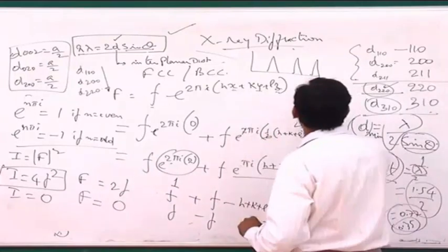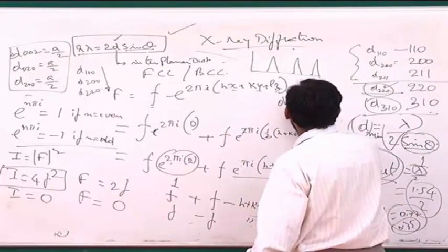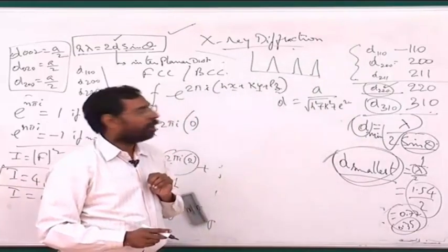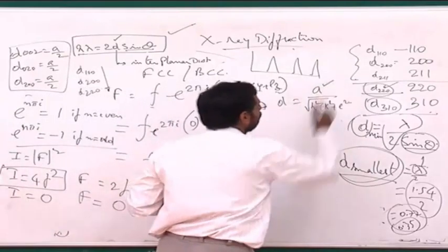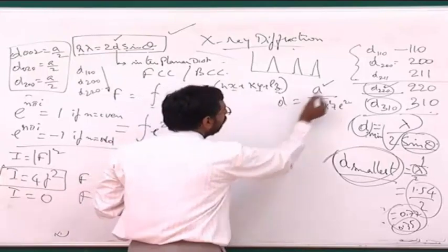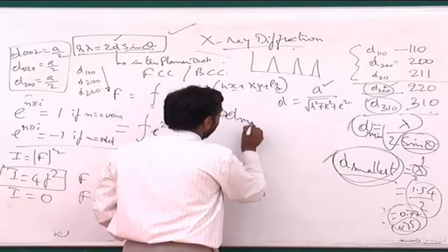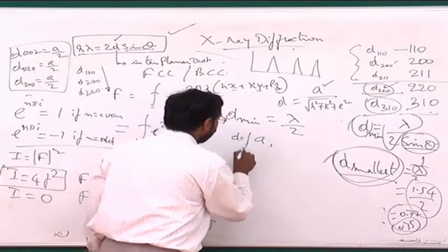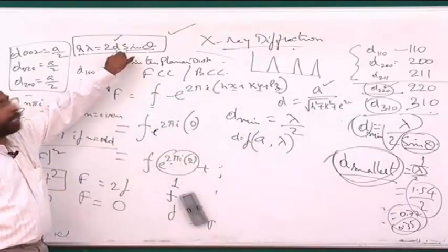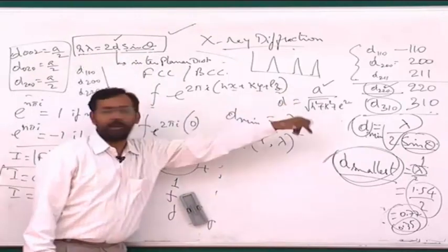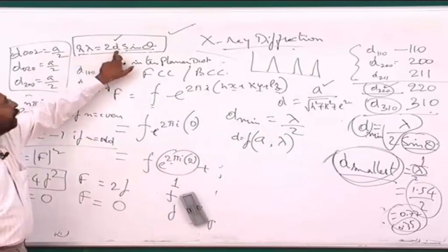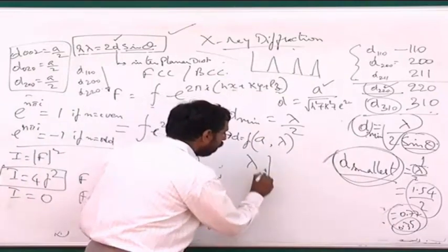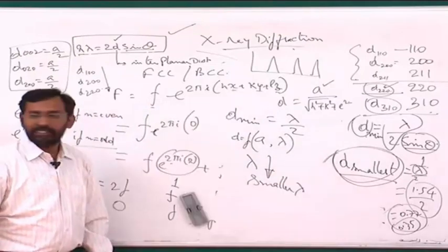Whether you see a particular peak depends on only two factors: lambda and A. The smaller the lambda, the better; the larger the A, the better. But A is fixed by the crystal structure — you cannot change it for a given material. So for a given material, the only way to get more peaks is to use a smaller lambda. Lambda is in our hands — we can change the X-ray target from copper to molybdenum or other higher-Z elements, which have smaller K-alpha wavelengths since lambda decreases as Z increases.